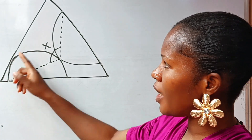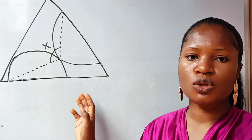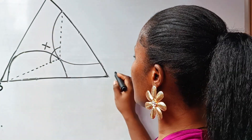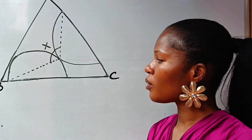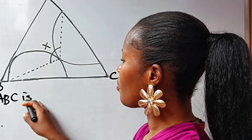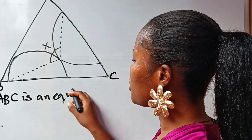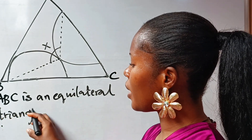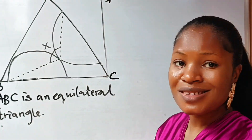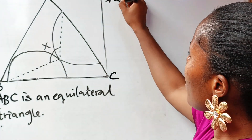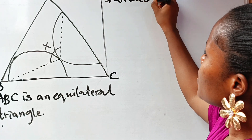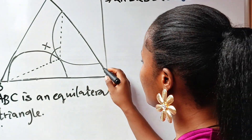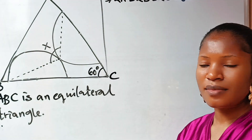This is touching this line at this point. As I said, this is a freehand sketch so don't expect it to be perfect. Now, triangle ABC is an equilateral triangle — that is an important piece of information. This implies that angle A is equal to angle B, which is equal to angle C, which is equal to 60 degrees.